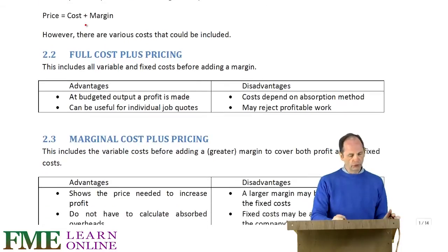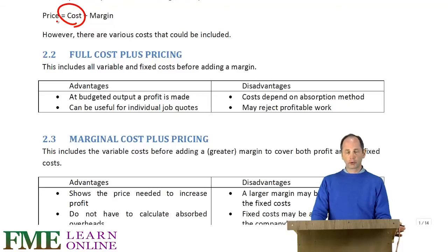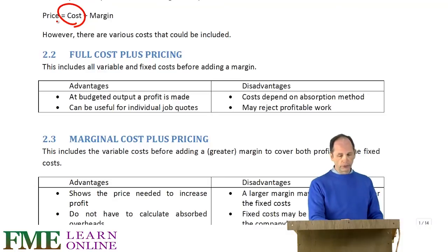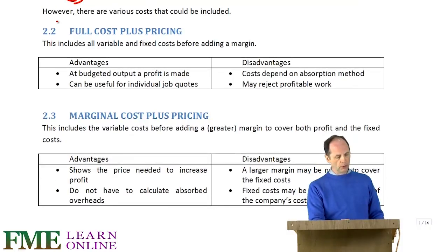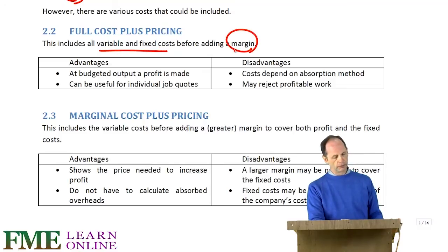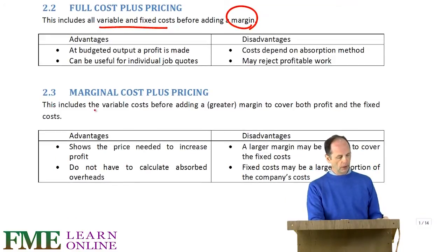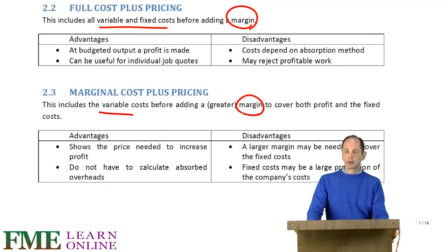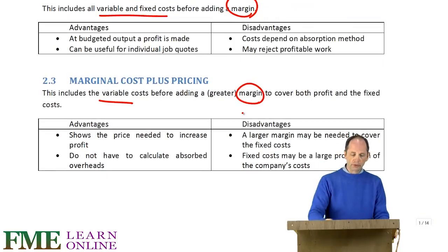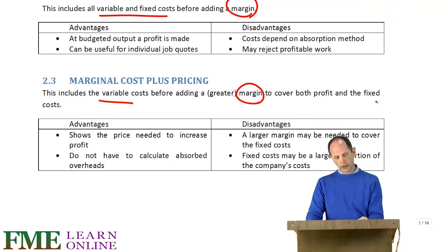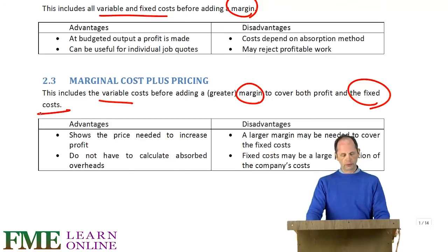The question is which costs should we use. Should we go for all costs including fixed costs on an absorbed basis, or just variable costs? Full cost pricing includes all the variable and fixed costs and then adds a margin. Marginal cost-plus pricing only includes the variable costs before adding a margin. That margin under marginal costing clearly has to be bigger, because it's got to cover not only a profit but also the fixed costs.